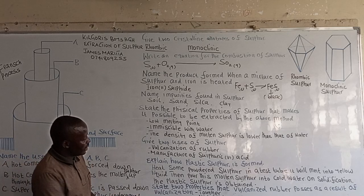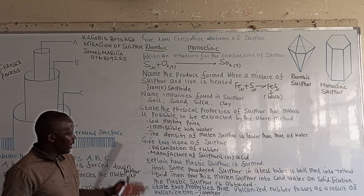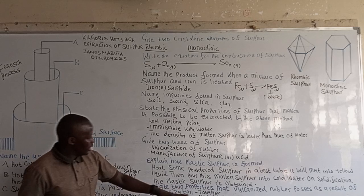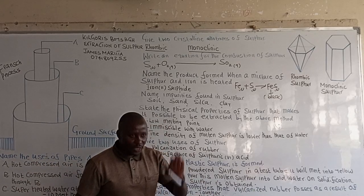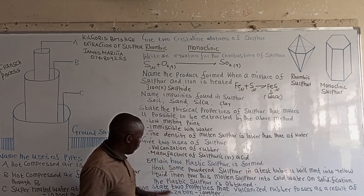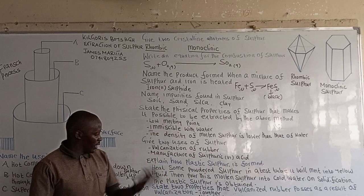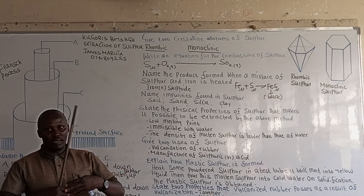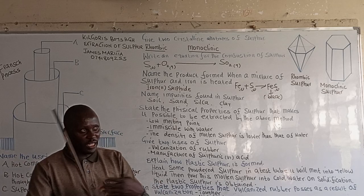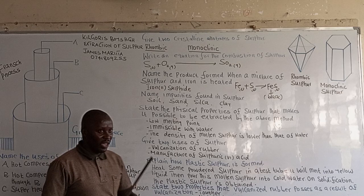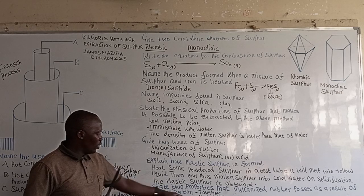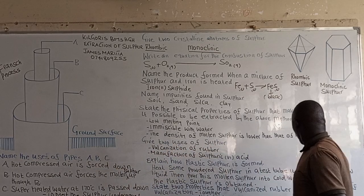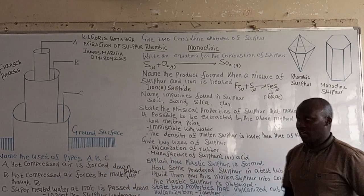State two properties that vulcanized rubber possesses as a result of full vulcanization. The properties are: it is harder, it improves the flexibility of the tire, and it makes it tough. So vulcanized rubber is harder, more elastic, and tougher — these are the properties it possesses as a result of vulcanization.